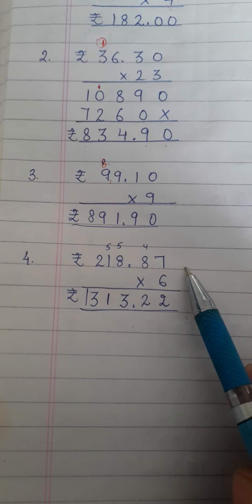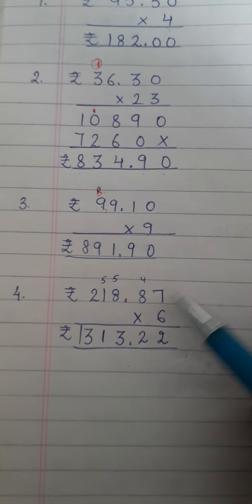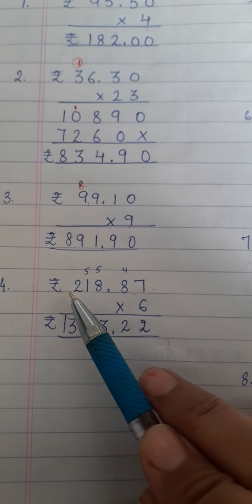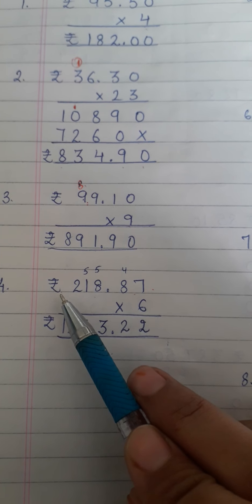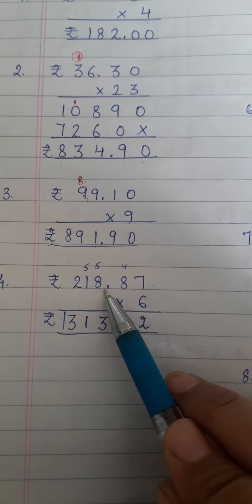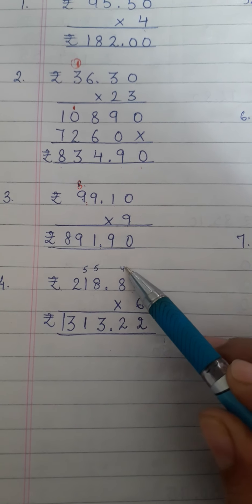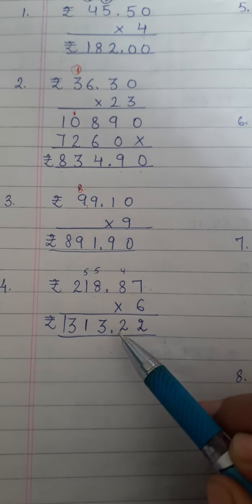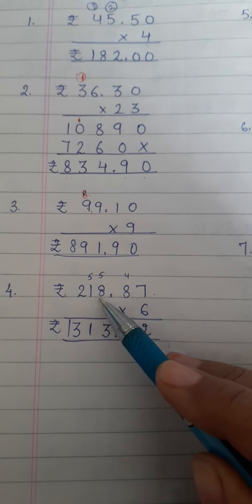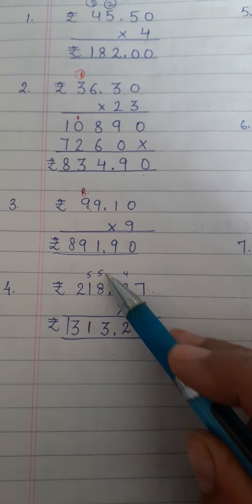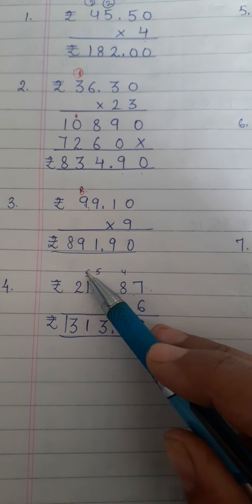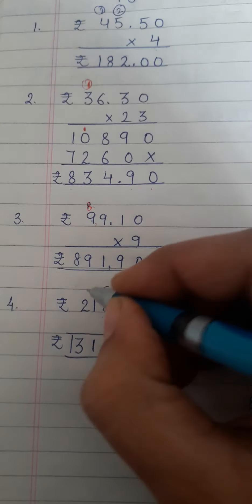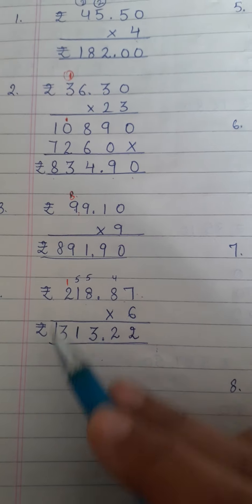218.87 multiply by 6. So 218 is rupees and 87 is paisa. To separate rupees from paisa we have to put decimal. 6 sevens are 42 carry over 4. 6 eights are 48 plus 4, 52 carry over 5. 6 eights are 48 plus 5, 53 carry over 5. 6 ones are 6 plus 5, 11 carry over 1. 6 twos are 12 plus 1, 13.